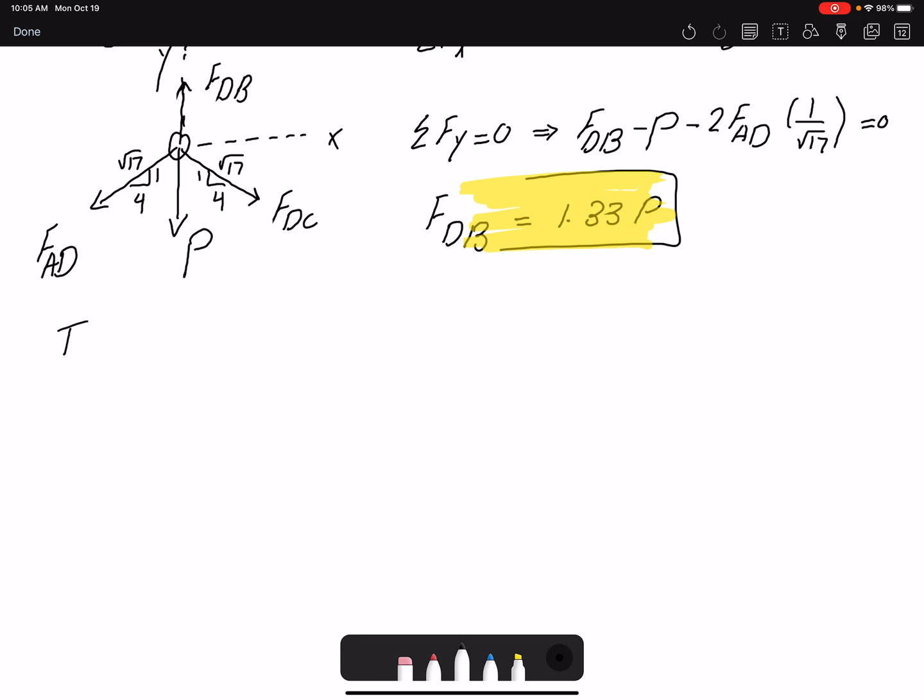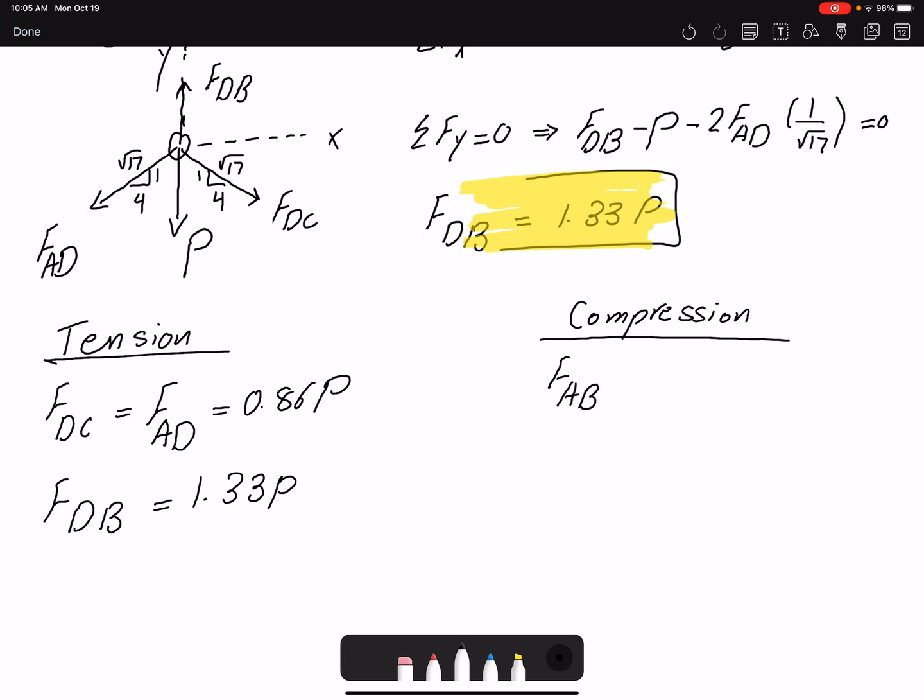Because that member has the highest force doesn't mean it's going to fail first, because that's going to be in tension. And tension has a larger capacity as the problem statement gives us. Let's list all the members and their value. The members in tension are FDC and FAD, 0.687P, and FDB, 1.33P. The members in compression are FBA and FBC, both 0.943P.